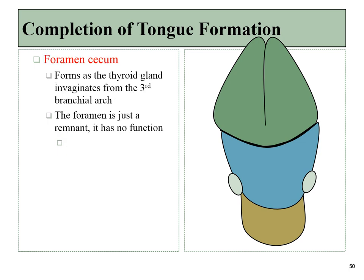Along the midline of the sulcus terminalis, a region of the ectoderm begins to grow and invaginate, forming the thyroid gland. It leaves behind a little bit of a depression called the foramen cecum, which has no function, except that the only way to grow the thyroid gland was to have a bunch of ectodermal tissue grow inwards.